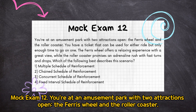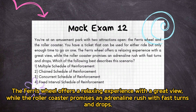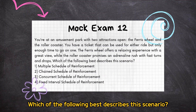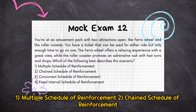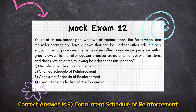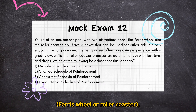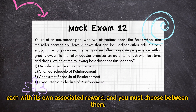Mock Exam 12: if you're at an amusement park with two attractions open — the Ferris wheel and the roller coaster — you have a ticket that can be used for either ride but only enough time to go on one. The Ferris wheel offers a relaxing experience with a great view, while the roller coaster promises an adrenaline rush with fast turns and drops. Which of the following best describes this scenario? (1) Multiple schedule of reinforcement, (2) Chain schedule of reinforcement, (3) Concurrent schedule of reinforcement, (4) Fixed interval schedule of reinforcement. Correct answer is 3: concurrent schedule of reinforcement. This scenario exemplifies concurrent schedules of reinforcement because you have two options — Ferris wheel or roller coaster — each with its own associated reward, and you must choose between them.